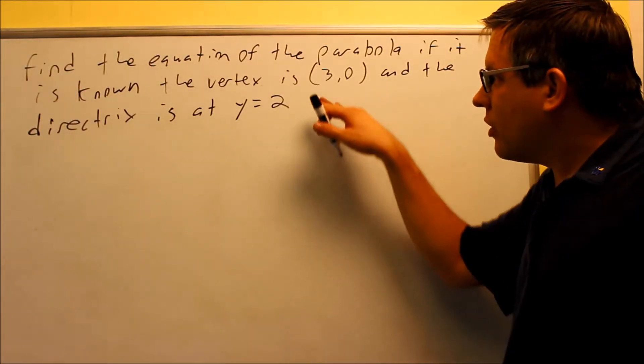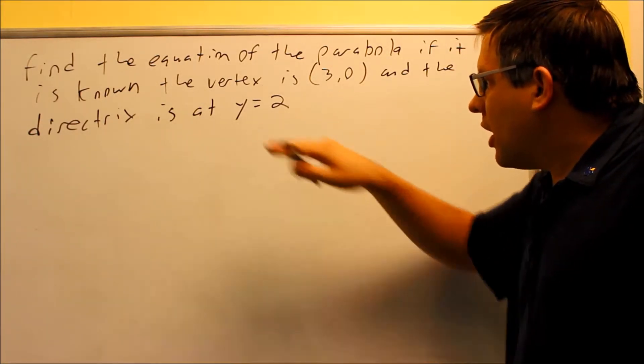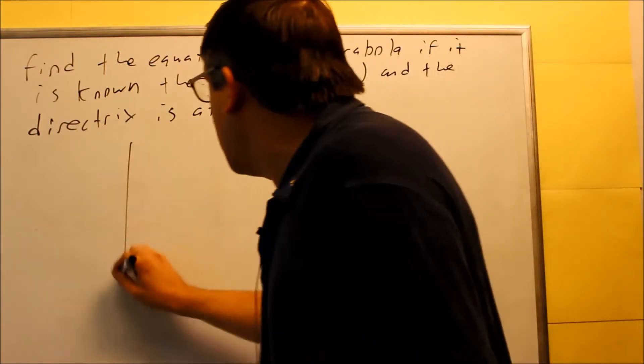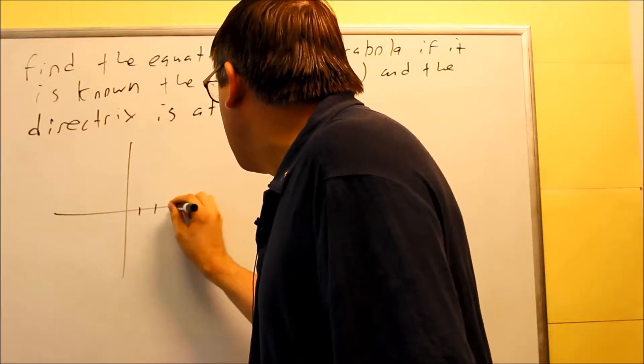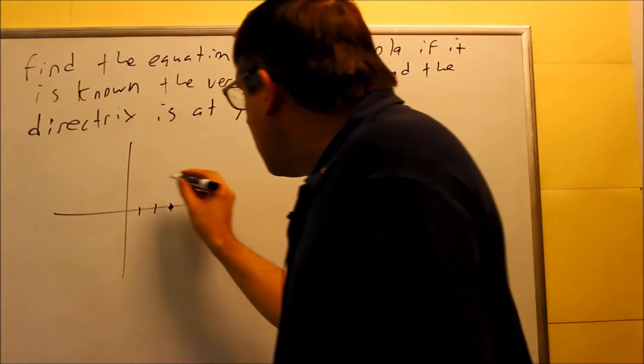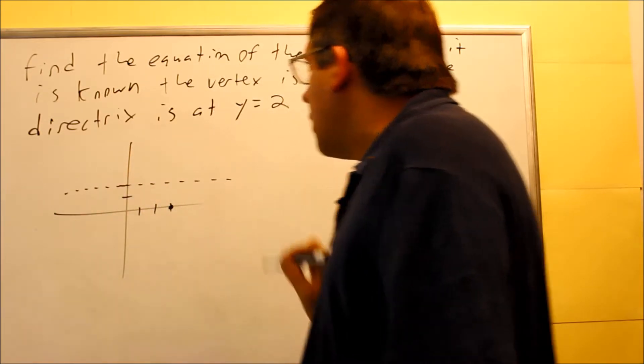Okay, for this one we're given the vertex 3, 0. Directrix is y equals 2. Let's plot the vertex and draw in the directrix. Okay, so if we do that, we're going to have 3, 0 is right here. Directrix is at y equals 2. Okay, so y equals 2 is going to be right here.